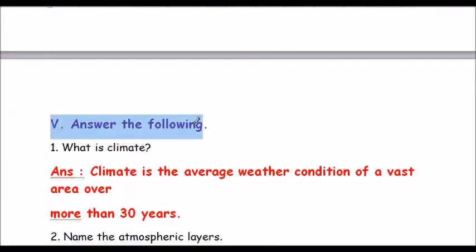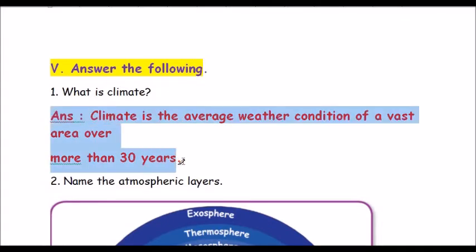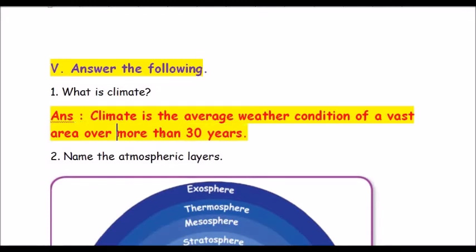Moving to Roman number five: Answer the following. Question one: What is climate? Climate is the average weather condition of a vast area over more than 30 years.